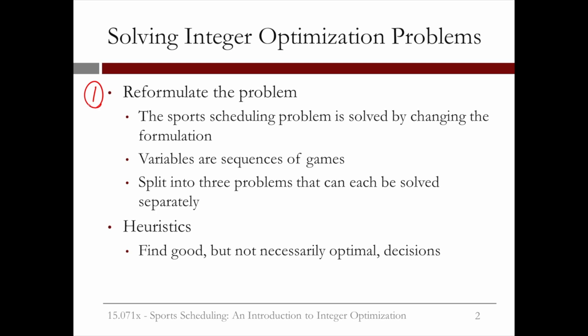Another trick that's often used is what are called heuristic methods. These methods find good but not necessarily optimal decisions. A good decision is sometimes accepted since the problem is so much easier to solve using a heuristic method.